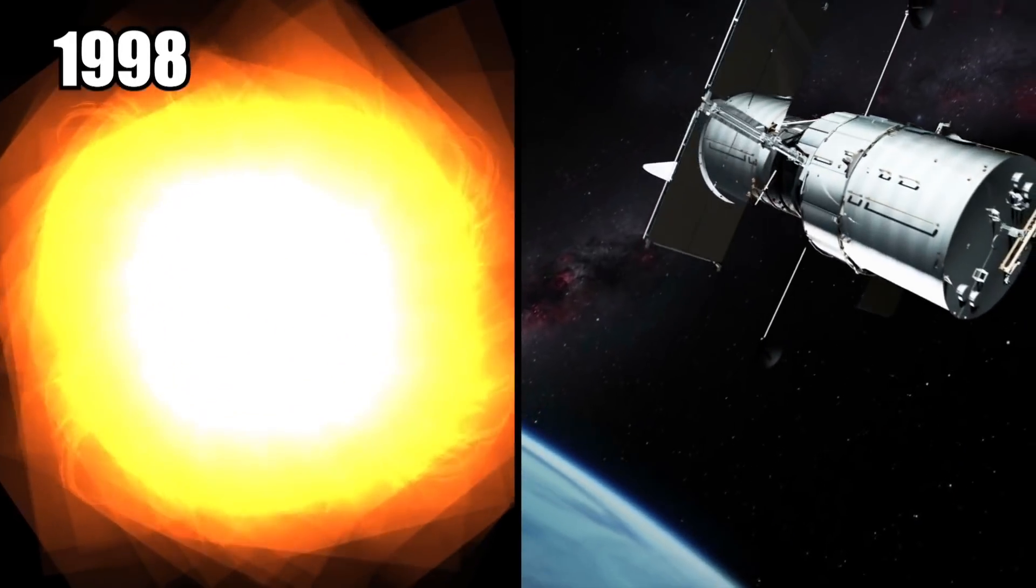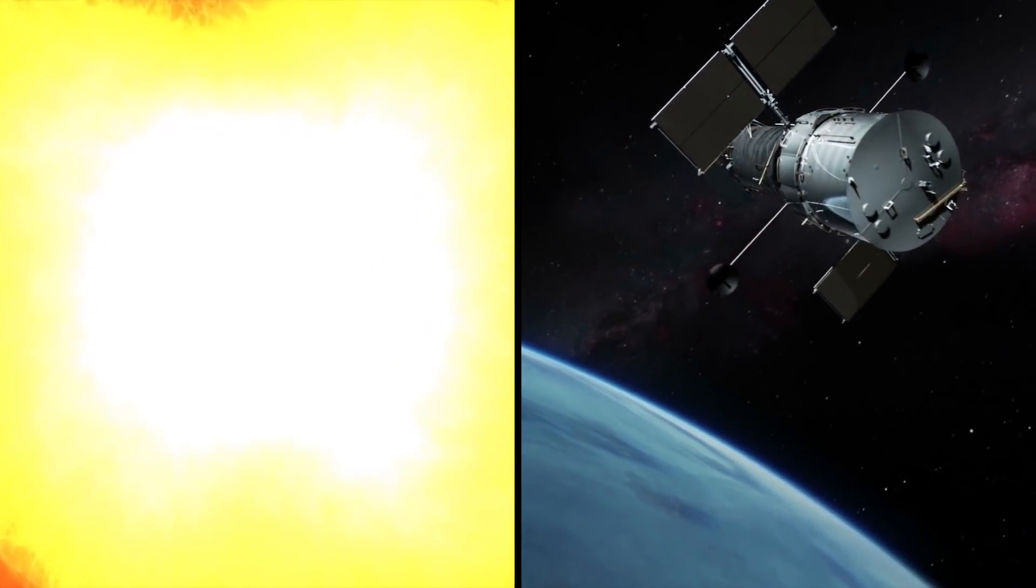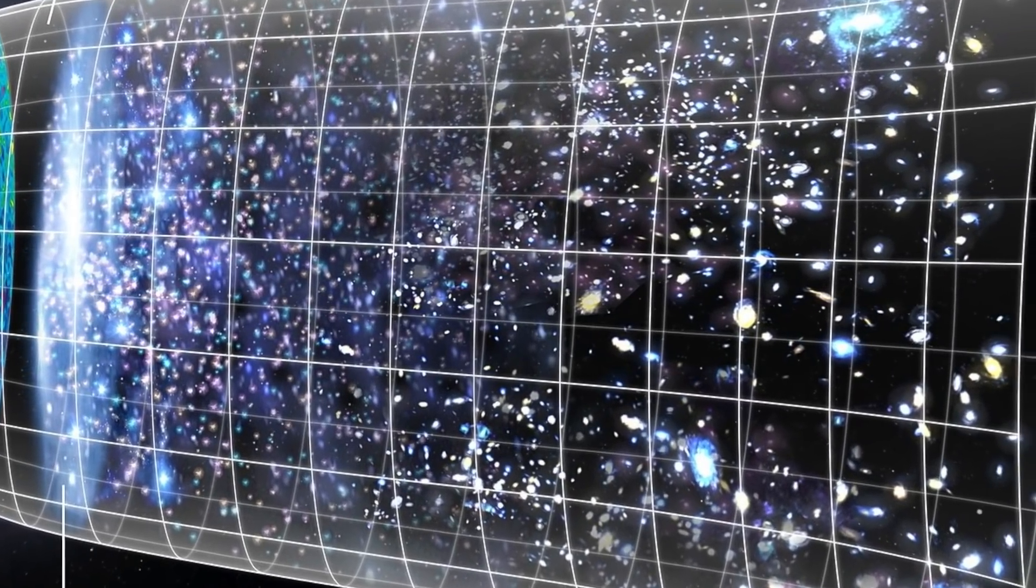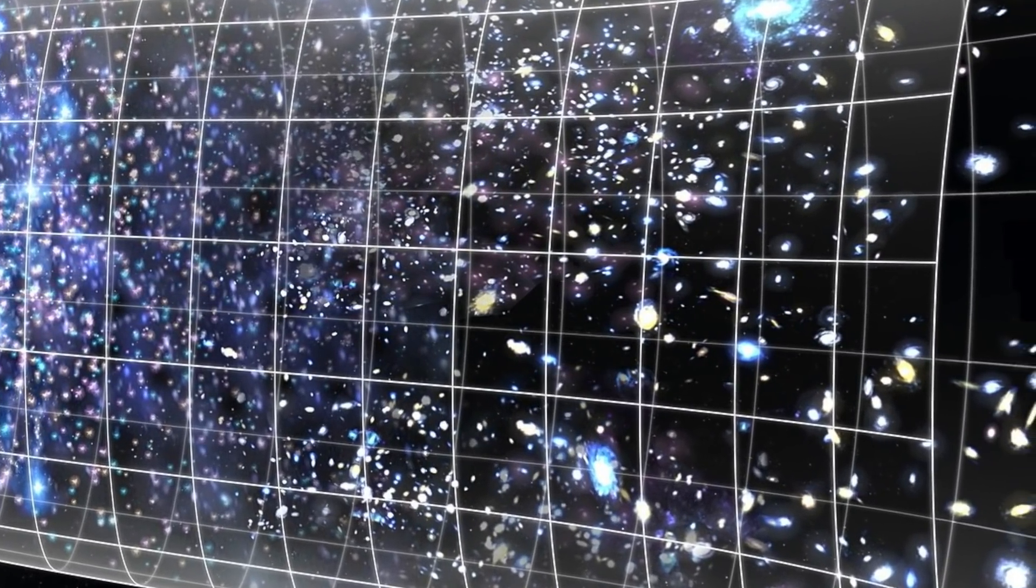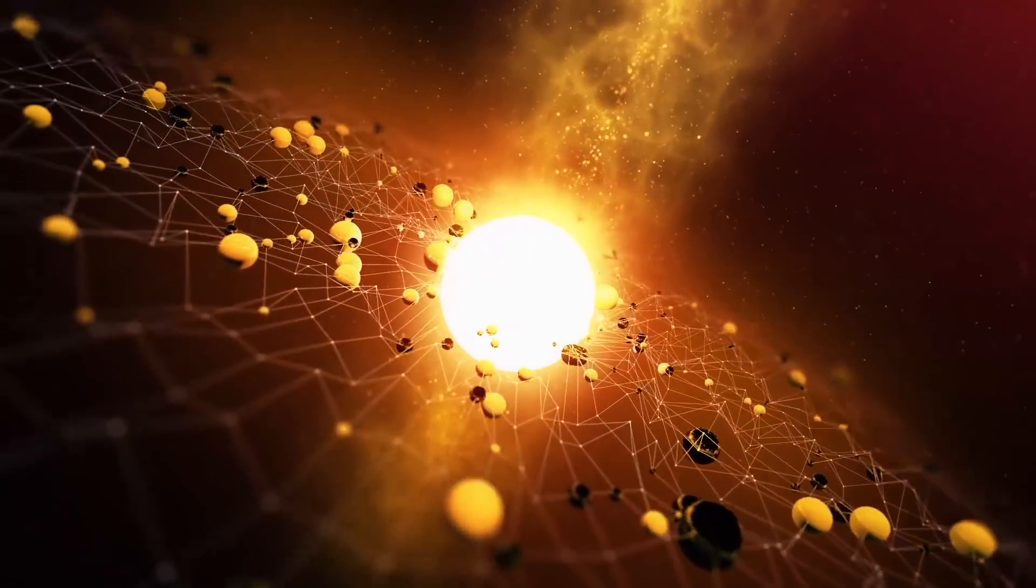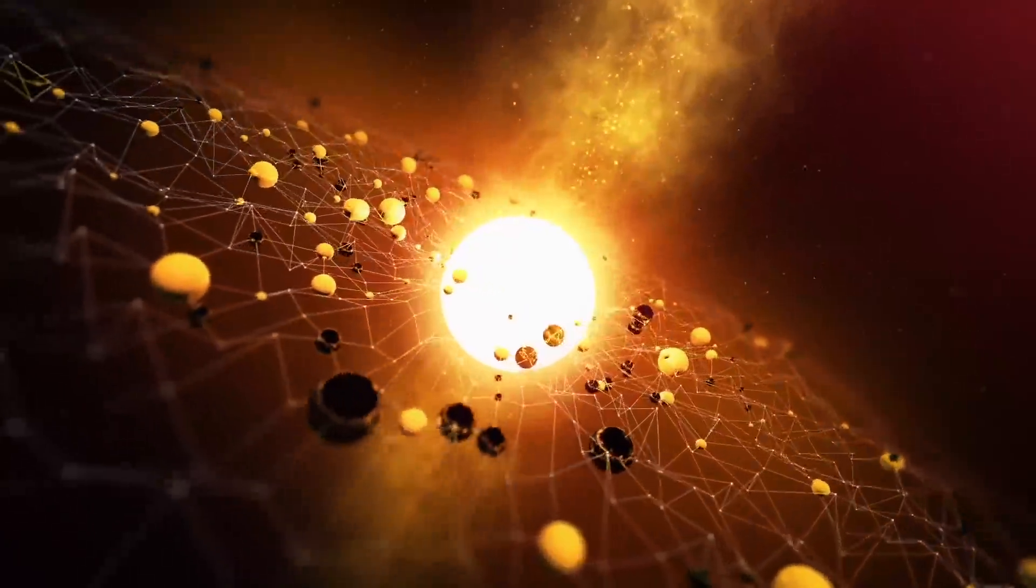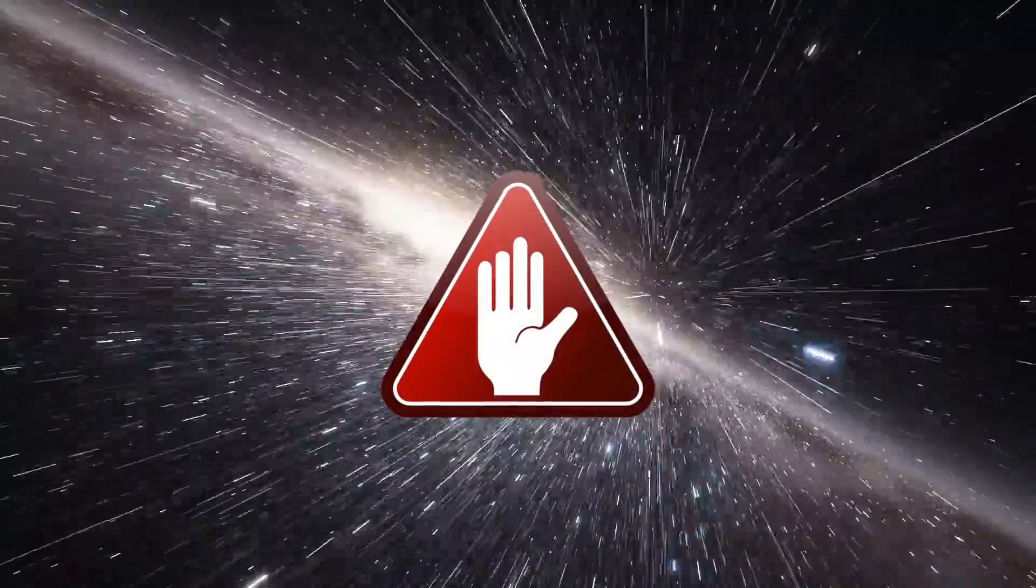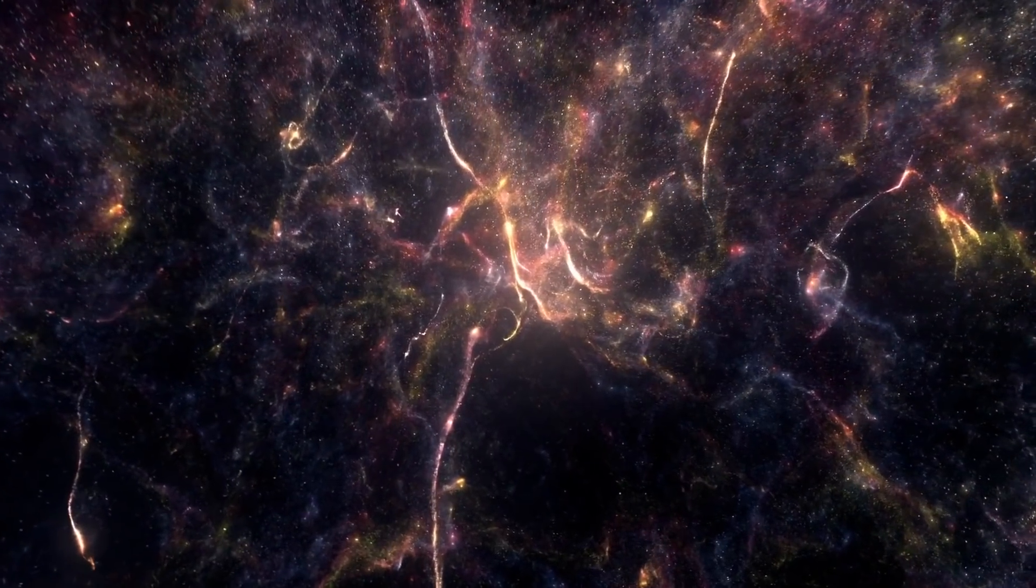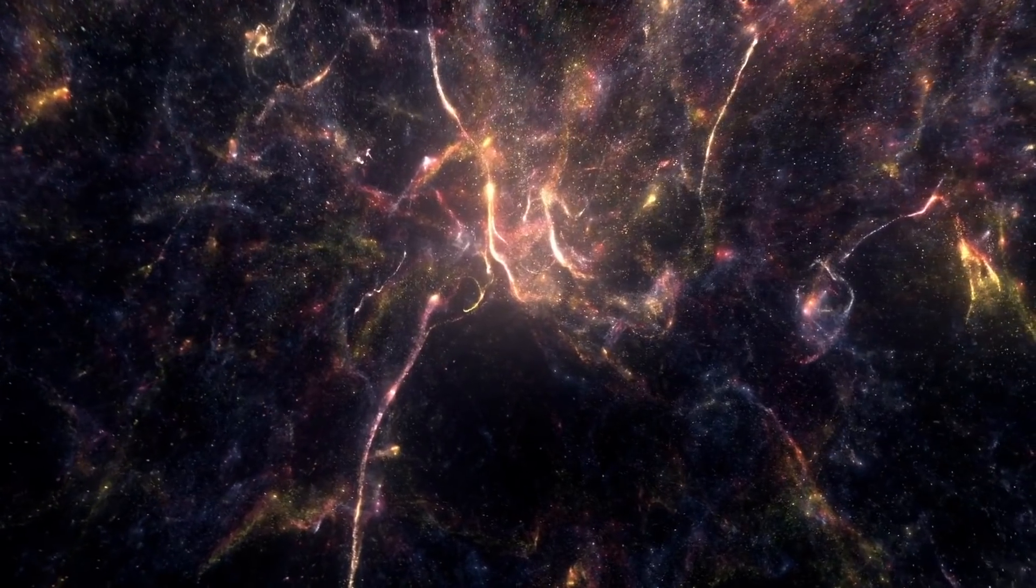It's believed to be responsible for the fact that the universe is expanding much faster than it should be. In 1998, scientists observed distant supernovae using the Hubble Space Telescope. They realized that in the distant past, the universe was expanding more slowly than it is now. This ran contrary to their theory that gravity would slow the expansion and eventually stop the universe from getting bigger.